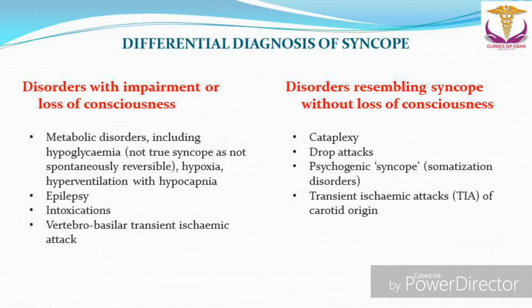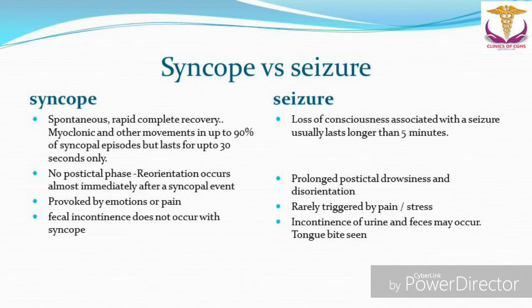Once you suspect syncope and your provisional diagnosis is almost made, think of other disorders that can mimic syncope. Disorders with impairment or loss of consciousness include: hypoglycemia (not a true syncope as it is not spontaneously reversible), hypoxia, hyperventilation with hypocapnia, epilepsy, intoxications, and vertebrobasilar transient ischemic attacks. Disorders resembling syncope without loss of consciousness include cataplexy, drop attacks, psychogenic syncope or somatization disorders, and TIAs of carotid origin.